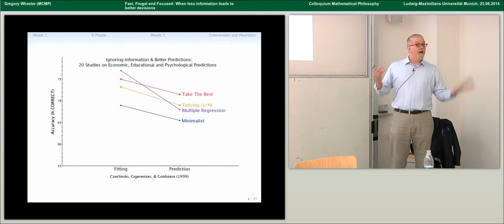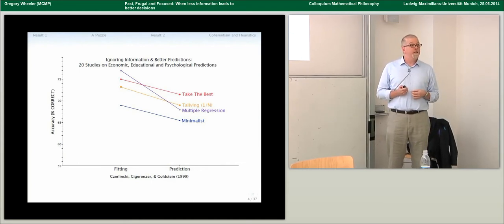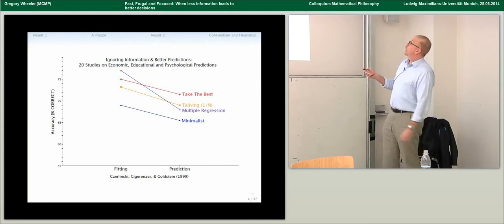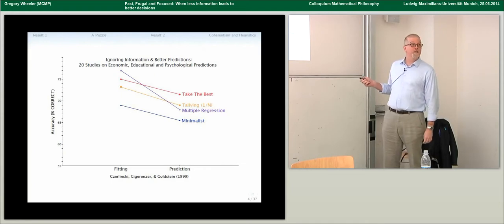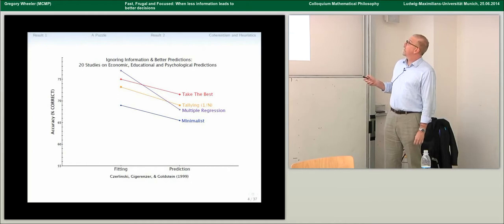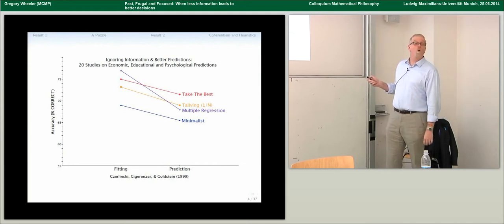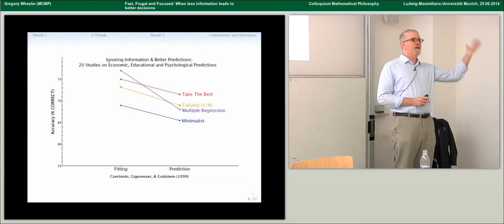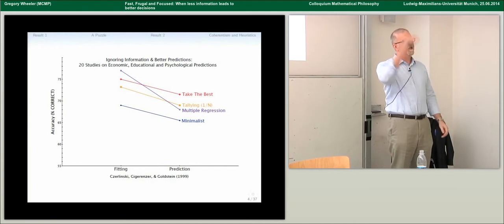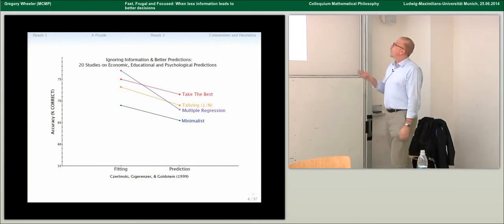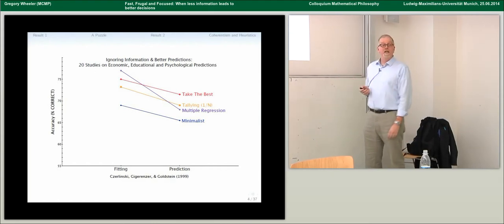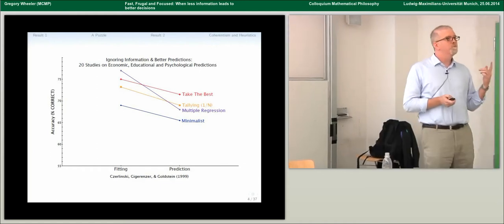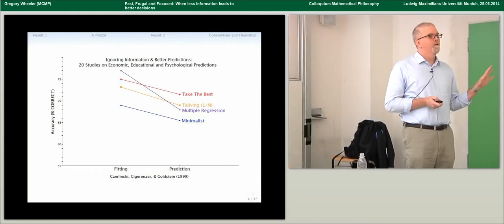Prediction is what I'm interested in: I have information and I want to make inferences about things I'm uncertain about. When you do out-of-sample prediction — and this was done on 20 studies — you get this crossover effect. Multiple regression performs less well than tallying. Tallying is like multiple regression but you ignore the weights: you count how many cues favor picking A versus B, integrating information but ignoring weights.